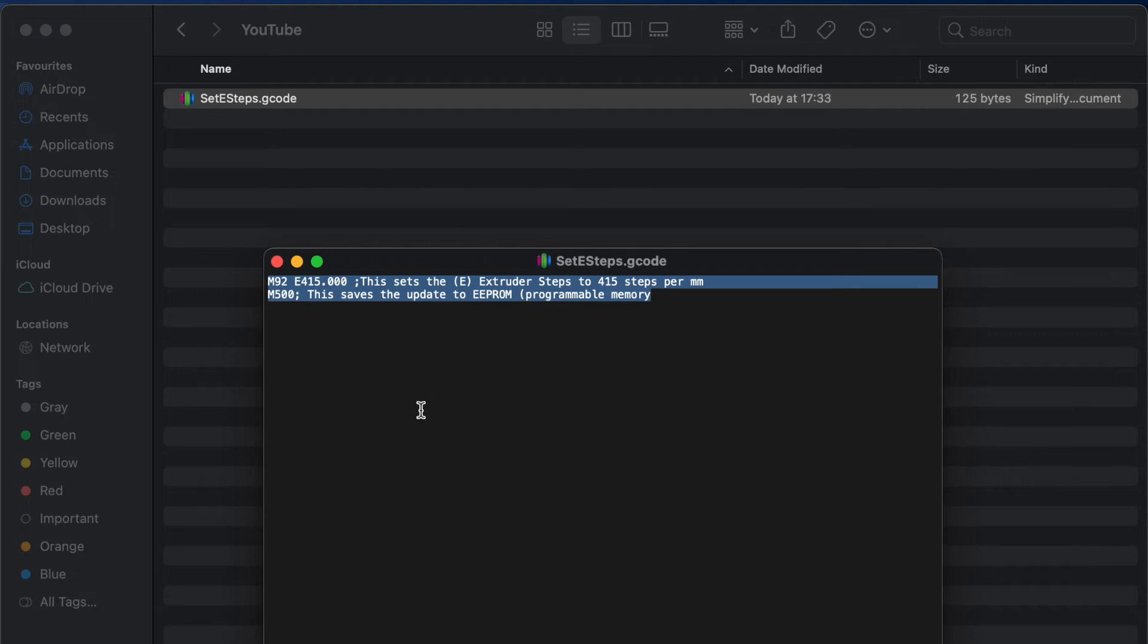So you could just create a file like this and run it on your printer like you would normally and it will update your extruder steps. If you have an interface set up like Pronterface or you're using OctoPrint, you could just throw in this command M92 E415 or whatever your esteps are, followed by the M500 command to save. The good thing about using an interface is you can then follow up with an M503 command and what that does is report the settings so you can see that the e-steps have updated directly.